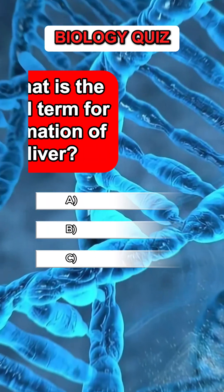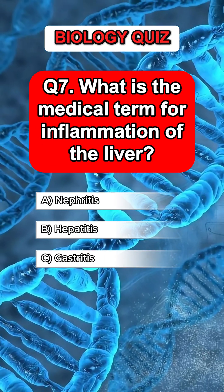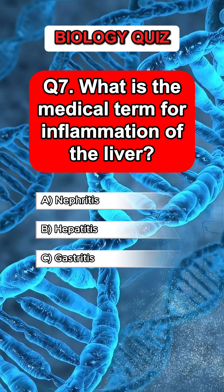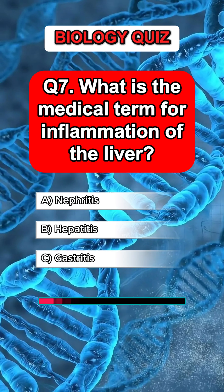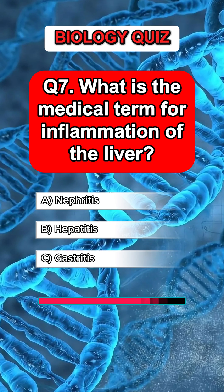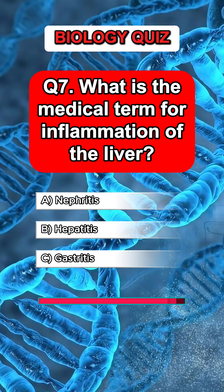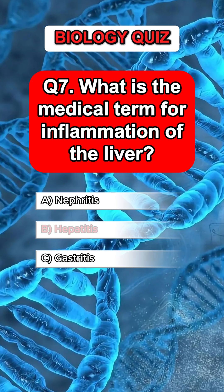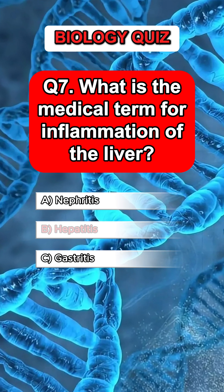Question 7. What is the medical term for inflammation of the liver? Answer B. Hepatitis.